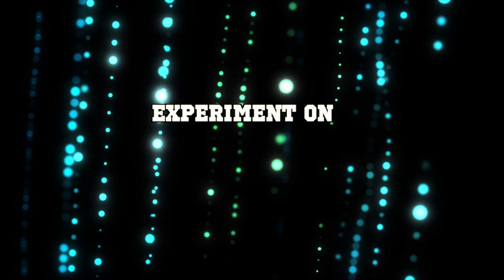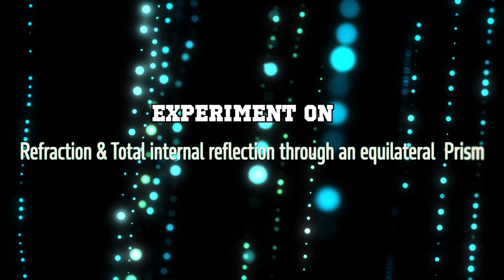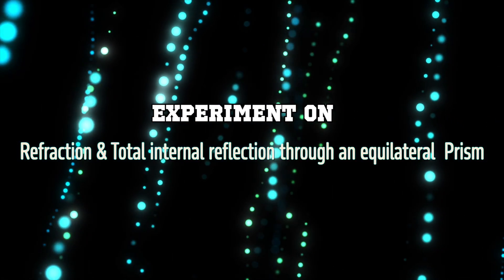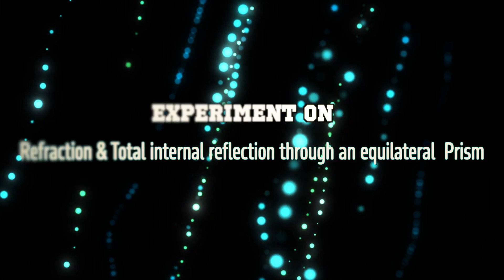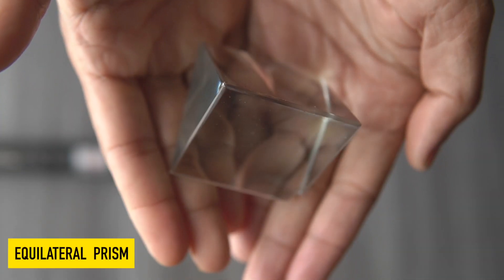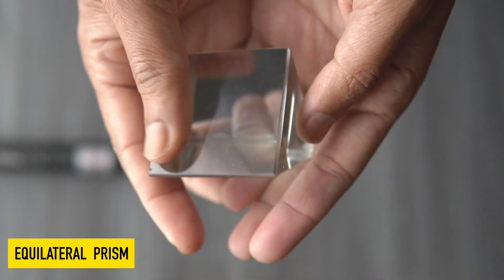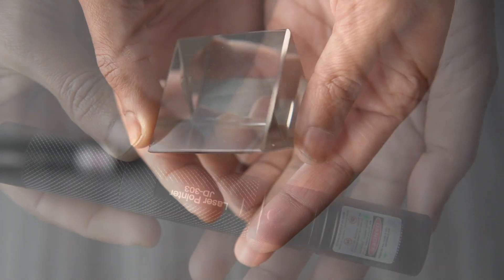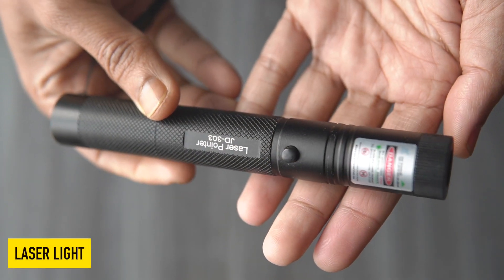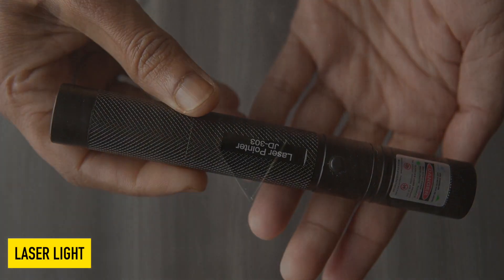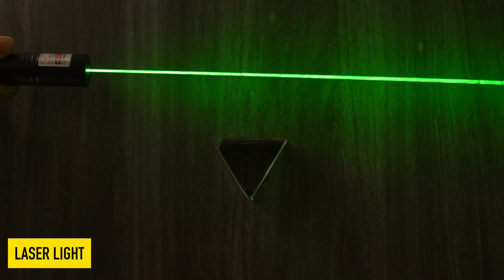Today we are going to perform an experiment on refraction and total internal reflection of light through an equilateral prism. For this experiment we will take a glass equilateral prism and a laser torch which can produce a straight beam of light.